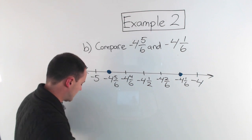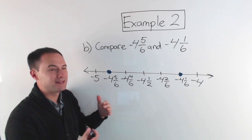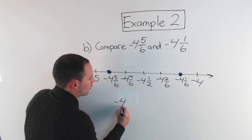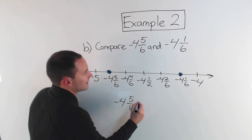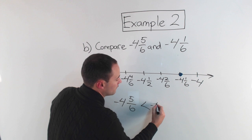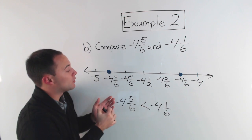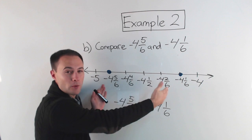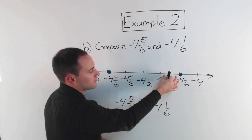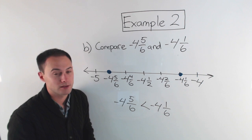As I move to the left, the value is decreasing on my number line, which means negative four and five-sixths is less than negative four and one-sixth. And if you wanted, you could even tell the distance between them: one-sixth, two-sixths, three-sixths, four-sixths — which we can simplify to just two-thirds.